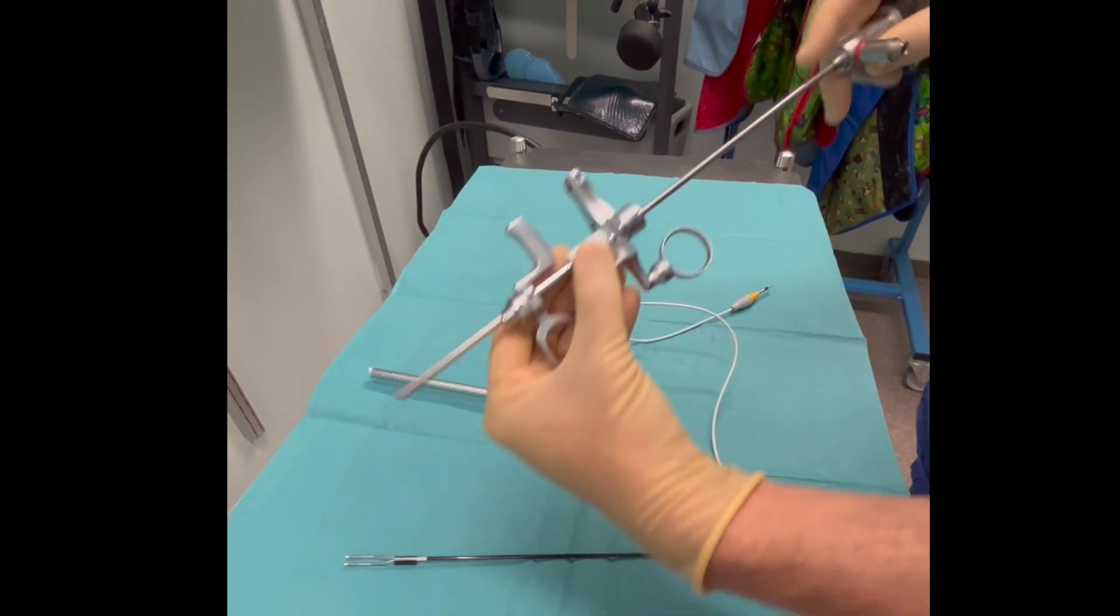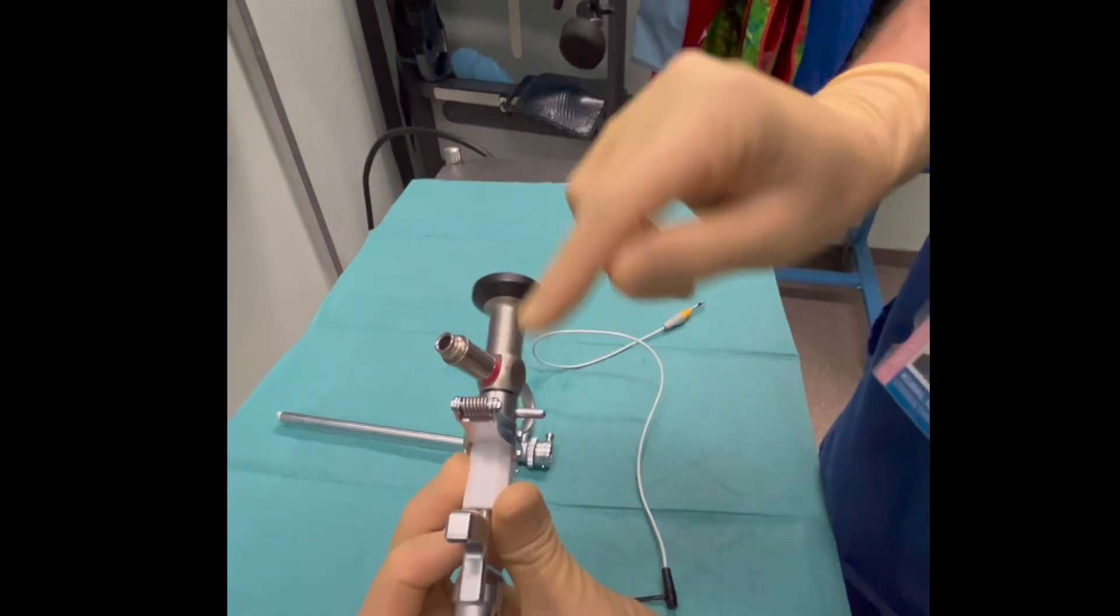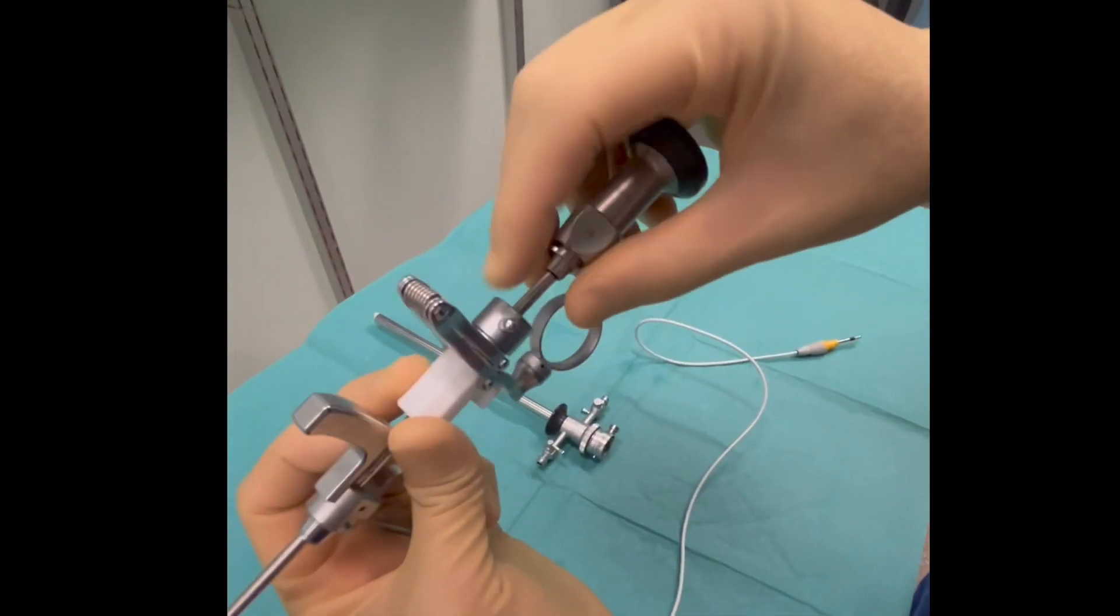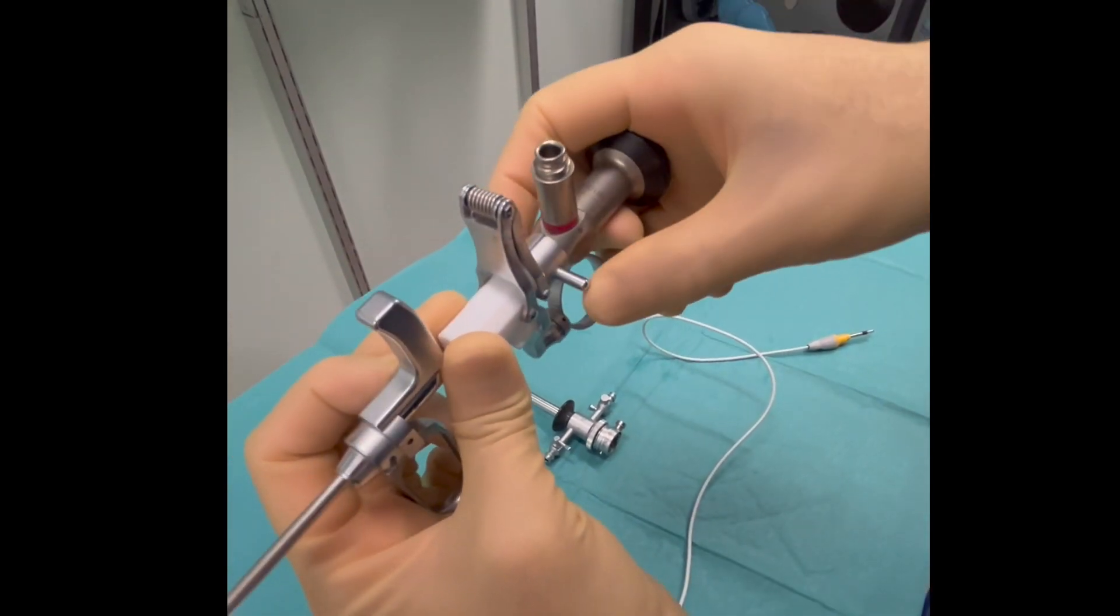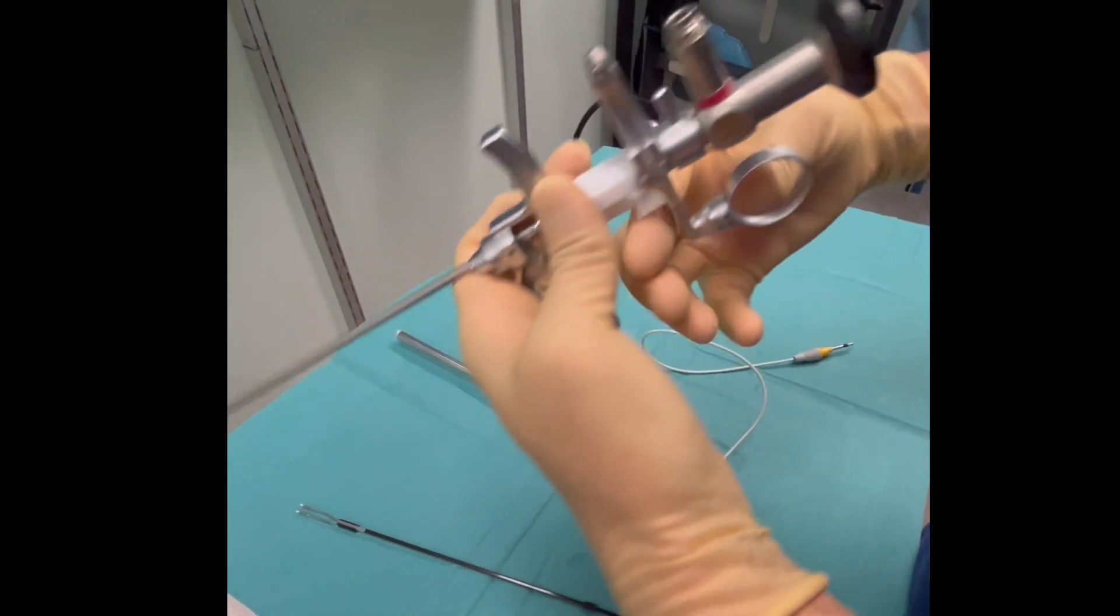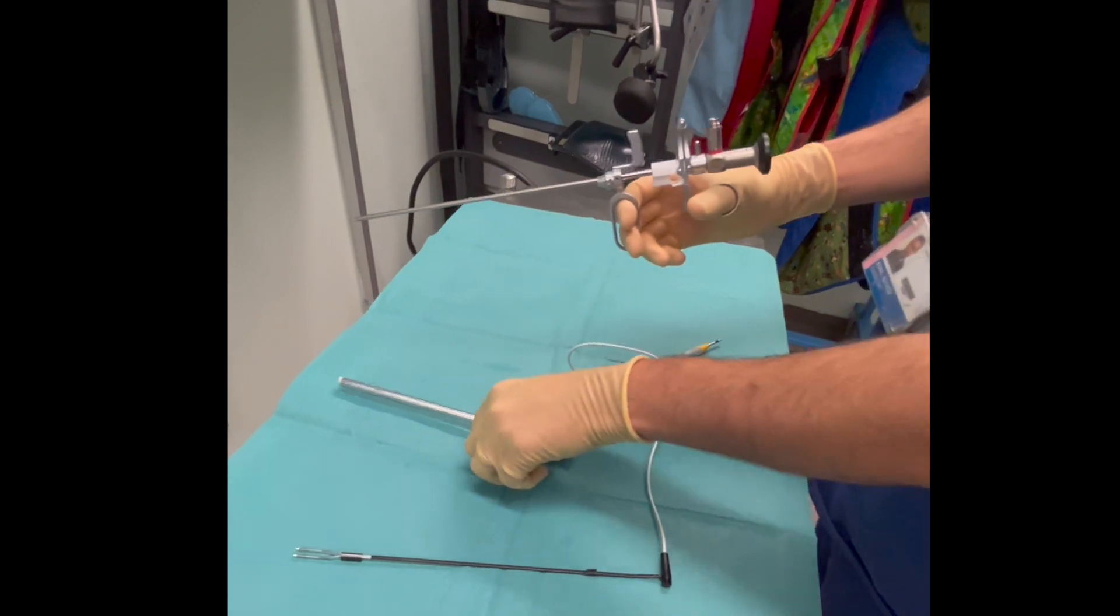This is the telescope that goes through the working channel. We look for a line on the working channel and the telescope, then we fix it. We make sure that it is tight without any loose attachments.